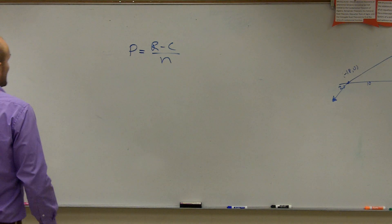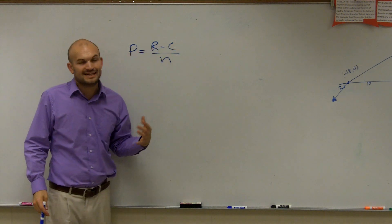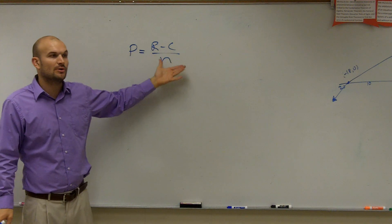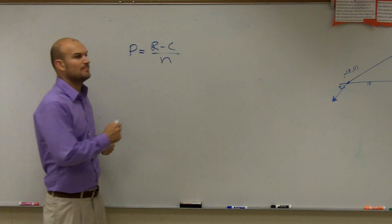So what we're going to do here is I have p equals r minus c divided by n. Now, the same exact thing, we have a variable on the bottom. We're trying to solve for r, right? We're going to solve for r.